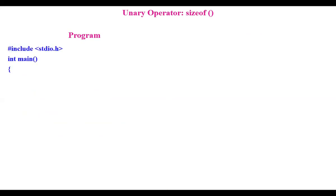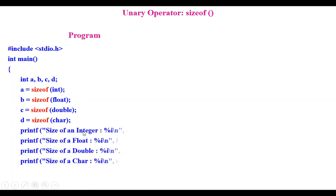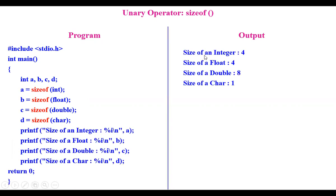Next is the sizeof operator. We take four integer variables A, B, C, D and assign each the size of int, float, double, and char respectively. When compiled, the results show: size of an integer is 4 bytes, size of float is 4 bytes, size of double is 8 bytes, and size of character is 1 byte. That is how the sizeof operator is used.